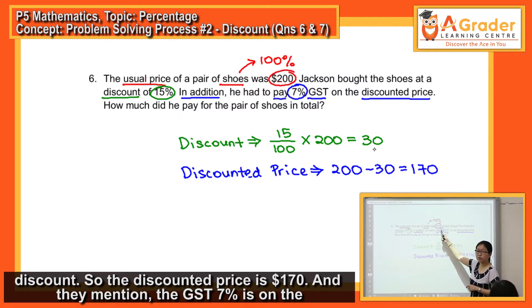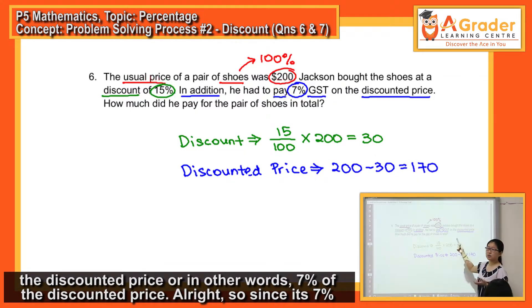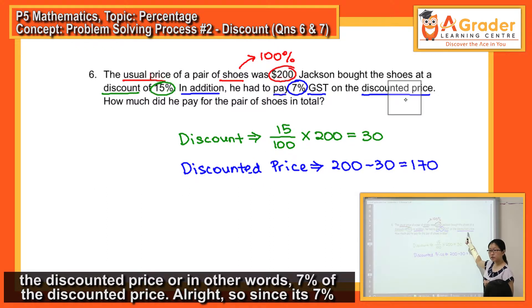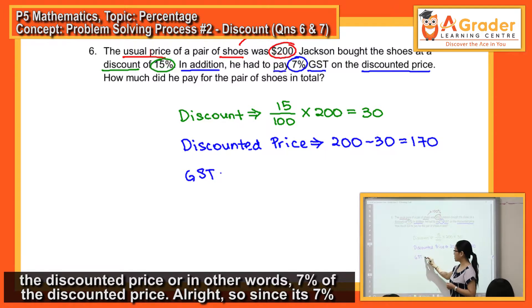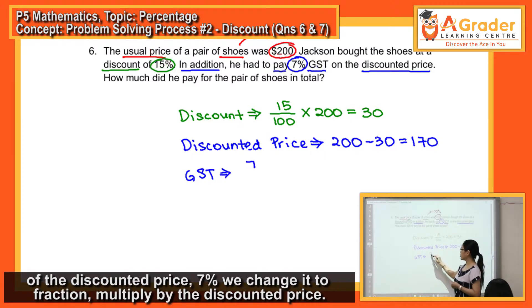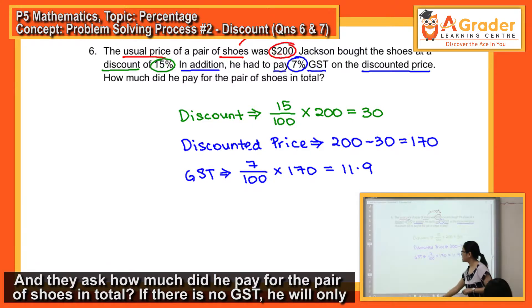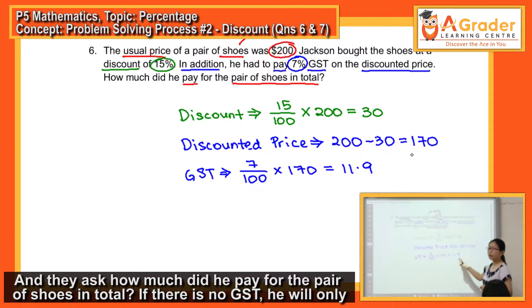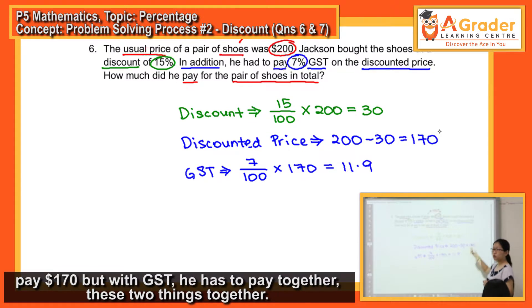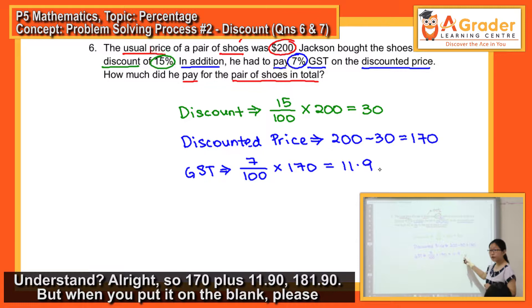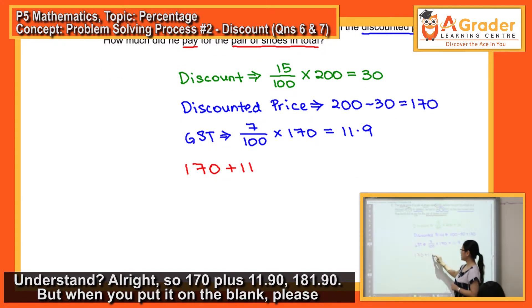And they mentioned the GST 7%, it's on the discounted price. Or in other words, 7% off the discounted price. So, since it's 7% off the discounted price, 7% we change it to fraction, multiplied by the discounted price. And they asked how much did he pay for the pairs of shoes in total. If there's no GST, he will only pay $170. But with GST, he has to pay together, these two things together. So, $170 plus $11.9, 181.9.